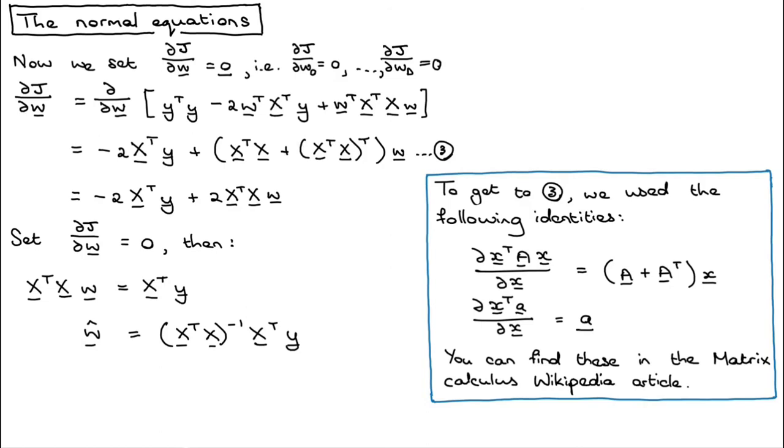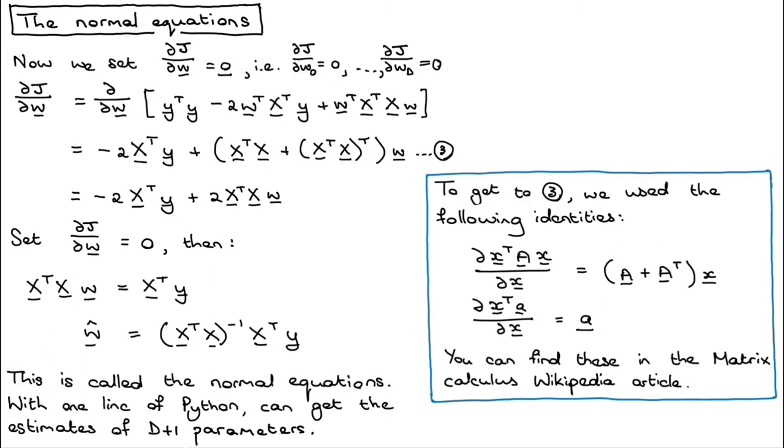This result is quite crucial. It actually has a very special name. It's called the normal equations. The cool thing is you just calculate the answer using your design matrix and your target vector. In one line of Python or MATLAB you can get the estimate for all of your d plus one parameters from w0 out to wd.